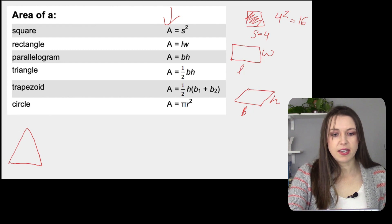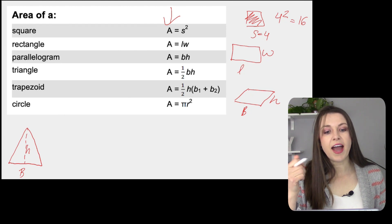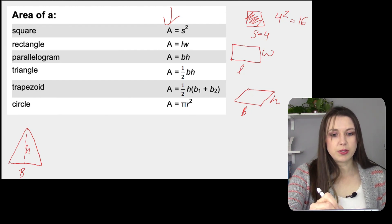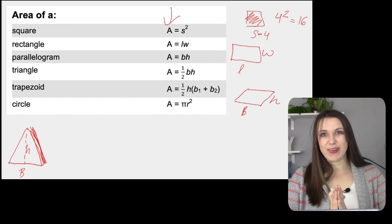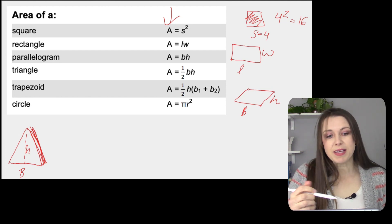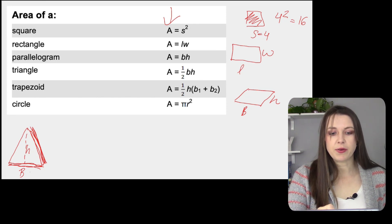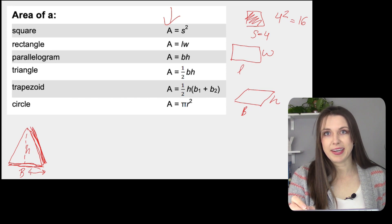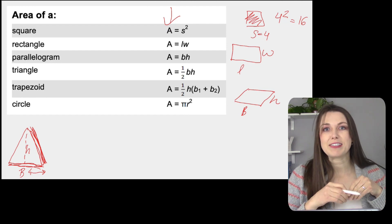Triangle: here we have our base and here we have our height. One thing that's important with the height is you are not going to use one of the side angles — you have to use the actual middle part of the triangle that goes straight up. Sometimes they'll provide you the whole base, and you'd use one half base times height. However, if they only provide you half the base, you'll need to drop that one half because you've already cut it in half.